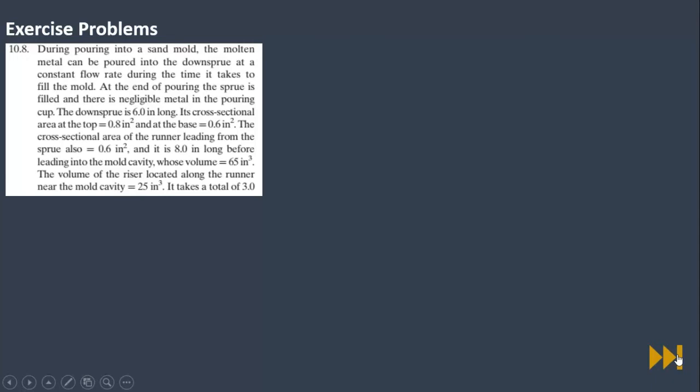Problem three: during pouring into a sand mold, molten metal is poured into a downhill sprue at a constant flow rate. The sprue is 6 inches long, with a cross-sectional area of 0.8 in² at the top and 0.6 in² at the base. The runner leading from the sprue has a cross-sectional area of 0.6 in² and is 8 inches long, leading into a mold cavity with a volume of 65 in³.